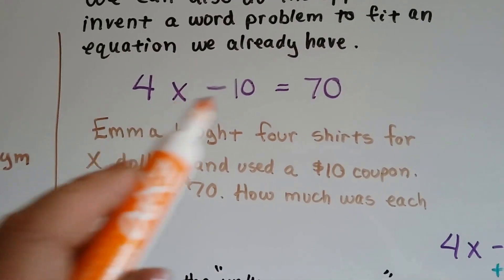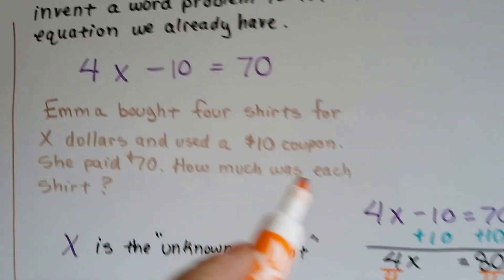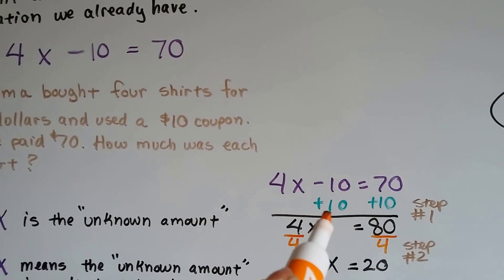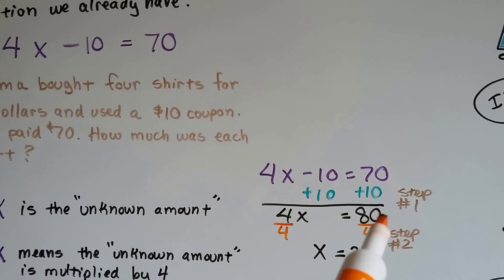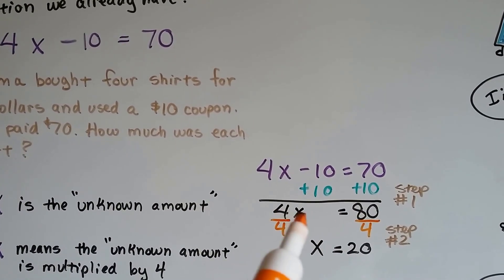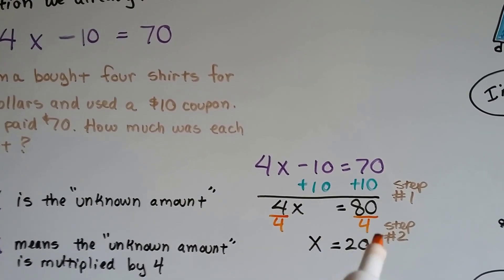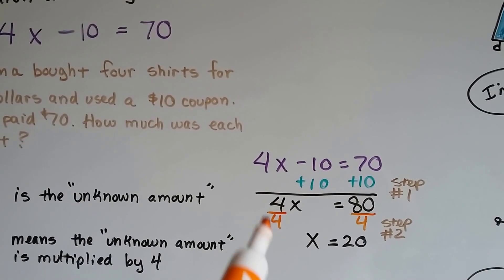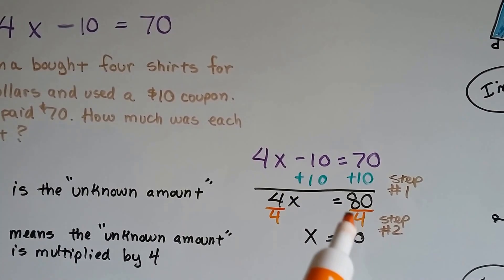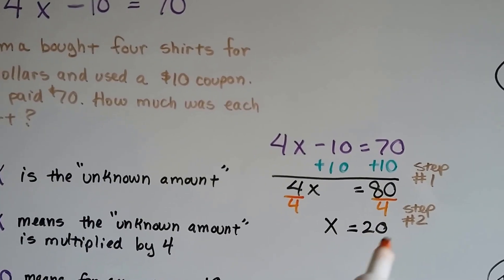So we would just solve this in two steps. Because this is minus 10, we would add 10 to each side. Then we would get 4x equals 80. Then, because this is a multiplication, we'd divide as our second step to get rid of this 4. And we'd end up with 80 divided by 4 is 20, so x equals 20.